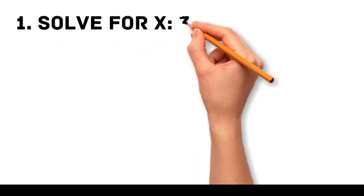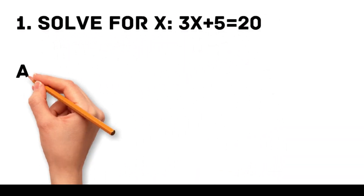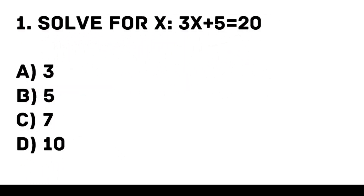Question 1. Solve for x. 3x plus 5 is equal to 20. A. 3. B. 5. C. 7. D. 10. Answer: C. 5.